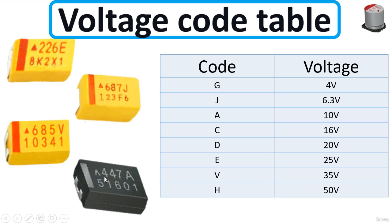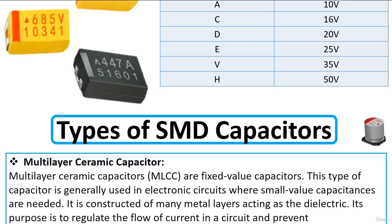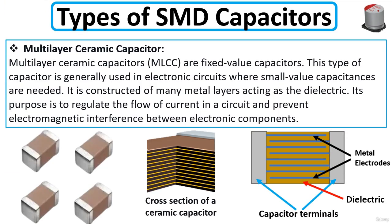We also have 447 A, where A means 10 volts. This is the working principle of how to read the code of electrolytic capacitors and tantalum capacitors. Now let's move on to the multi-layer ceramic capacitor.